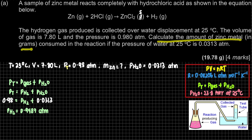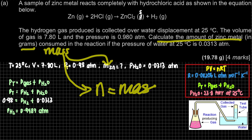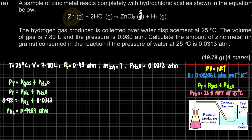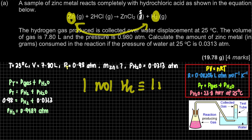The question asks to calculate the mass of zinc in grams. To find mass, we use n = m / M. But we first need the number of moles of zinc. Since we have no direct information about zinc, we must use the moles of H₂ and compare via stoichiometry. From the balanced equation, 1 mole of H₂ is equivalent to 1 mole of zinc.